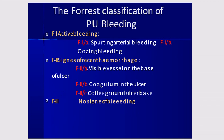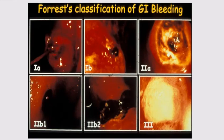The Forrest classification of peptic ulcer bleeding: F1 is active bleeding — F1A is spurting arterial bleed and F1B is oozing bleeding. F2 indicates signs of recent hemorrhage — F2A is a visible vessel on the base, F2B is a coagulum in the ulcer, and F2C is a flat pigmented spot on the ulcer base. F3 indicates no sign of bleeding. These are assessed endoscopically.